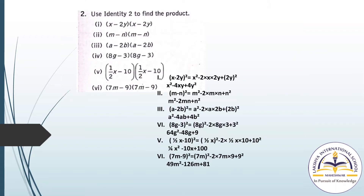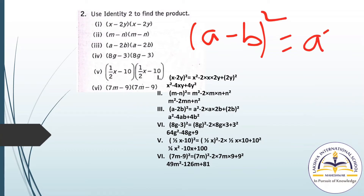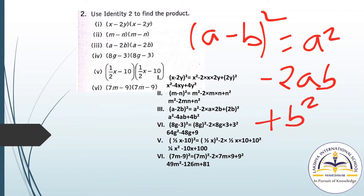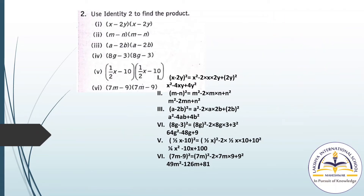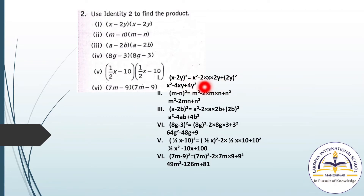Now question number 2 says: use Identity 2 to find the product. Identity 2 is (A - B) whole square equals A square minus 2AB plus B square. The first question is (X - 2Y) and (X - 2Y), so we write (X - 2Y) whole square. Applying the identity: X square minus 2 into X into 2Y plus (2Y) square.